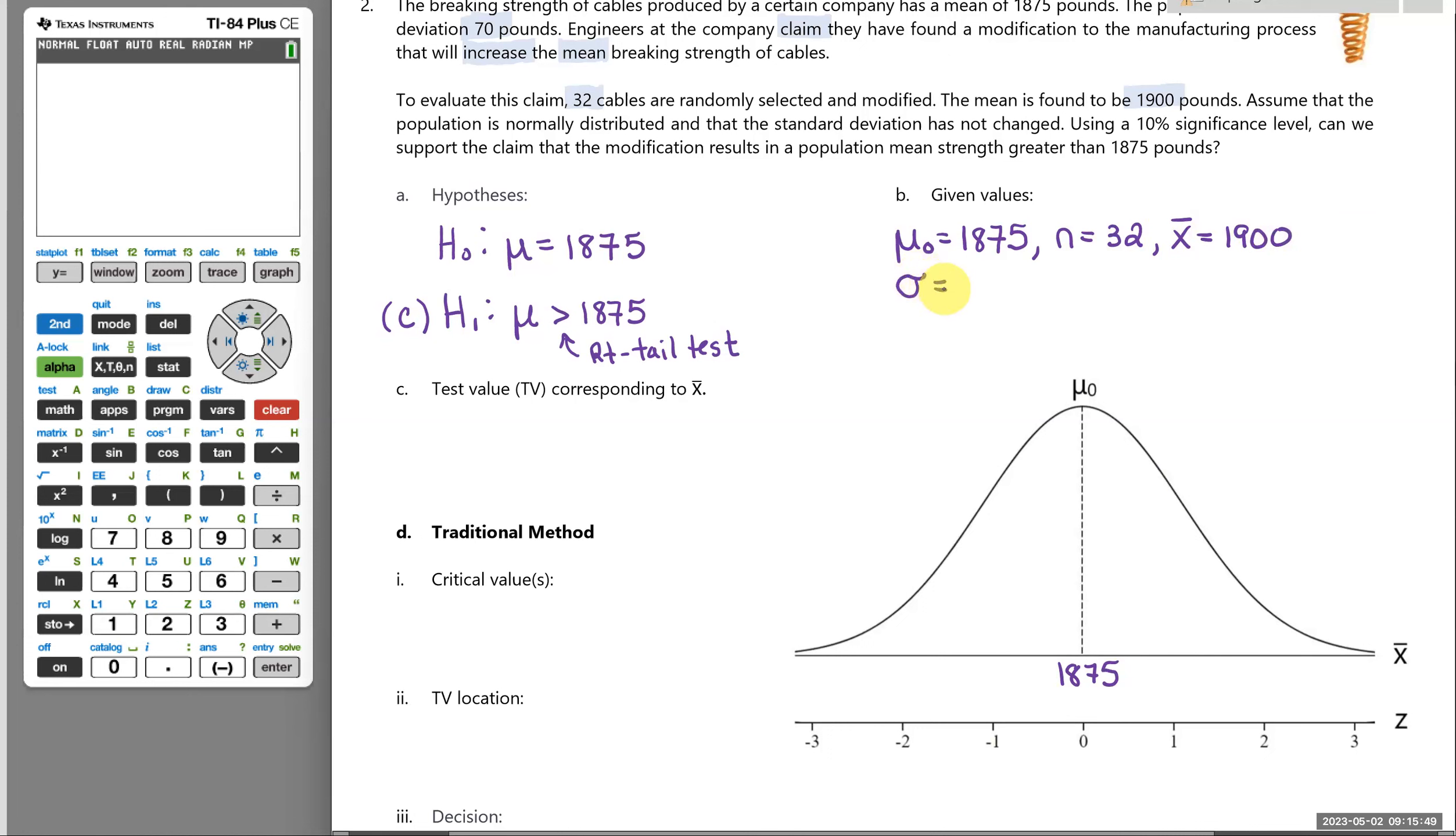And the sample mean for those is 1,900 pounds. We're going to assume the standard deviation is 70 pounds for the population, and alpha, our significance level, 10% or 0.10.